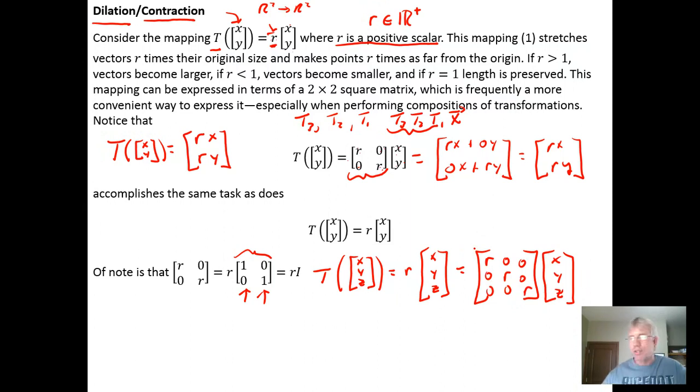And this would extend to Rn. It would be the same idea. You would just have an N by N diagonal matrix with your scaling factor R on the diagonal.